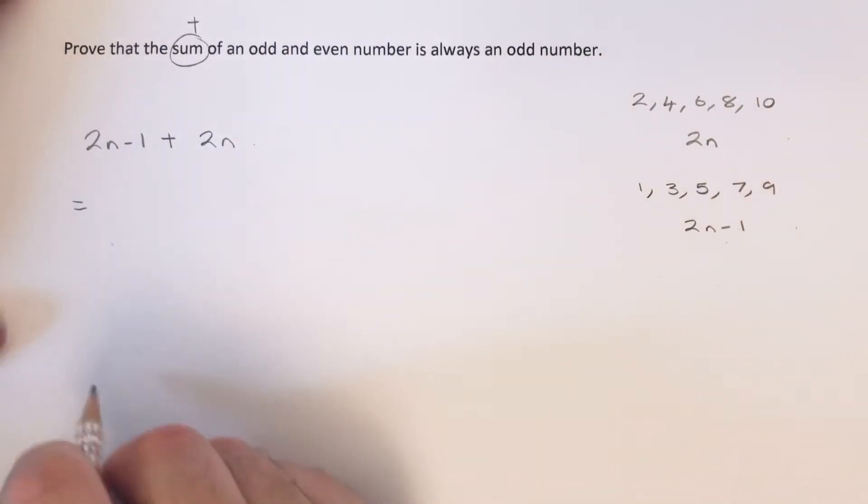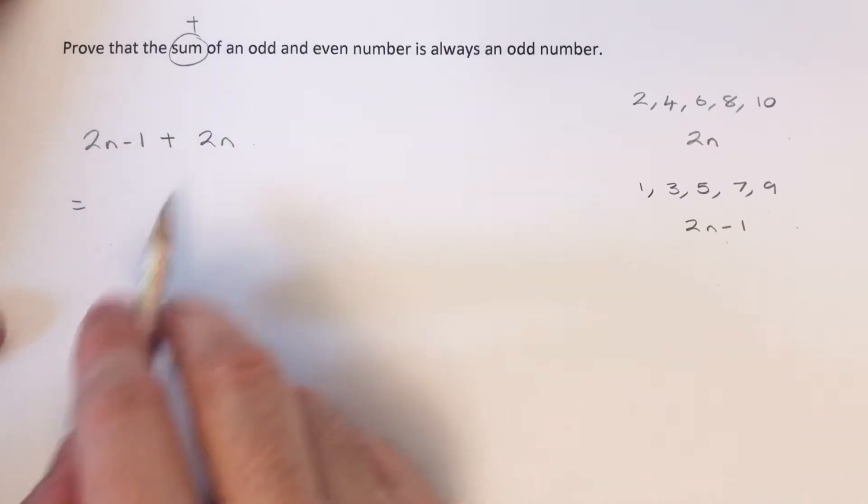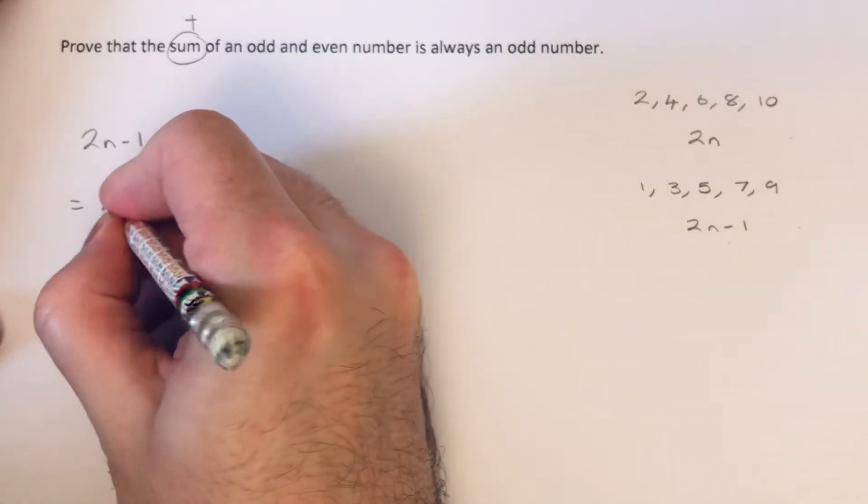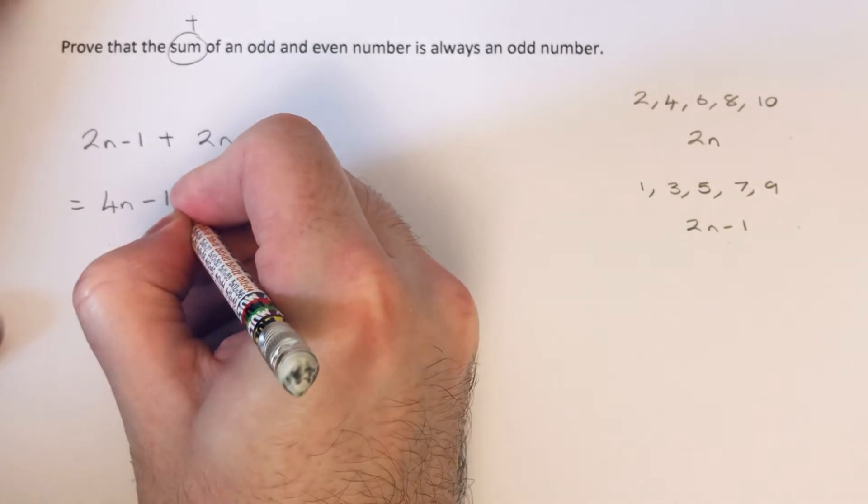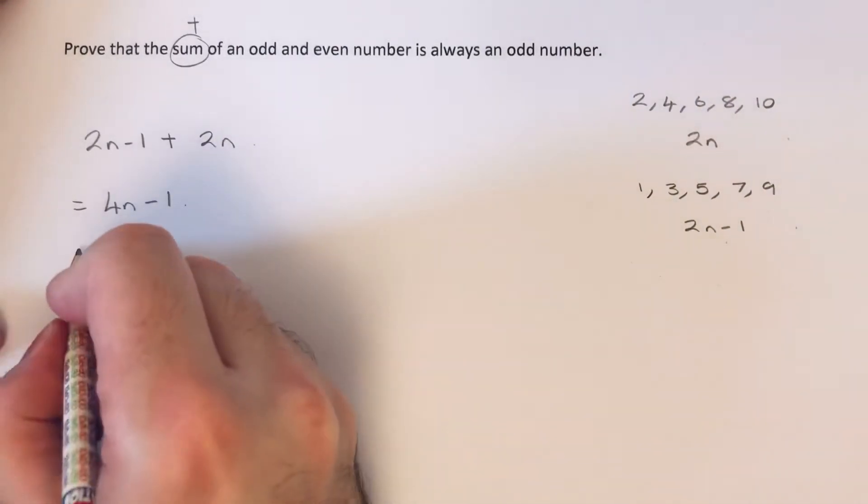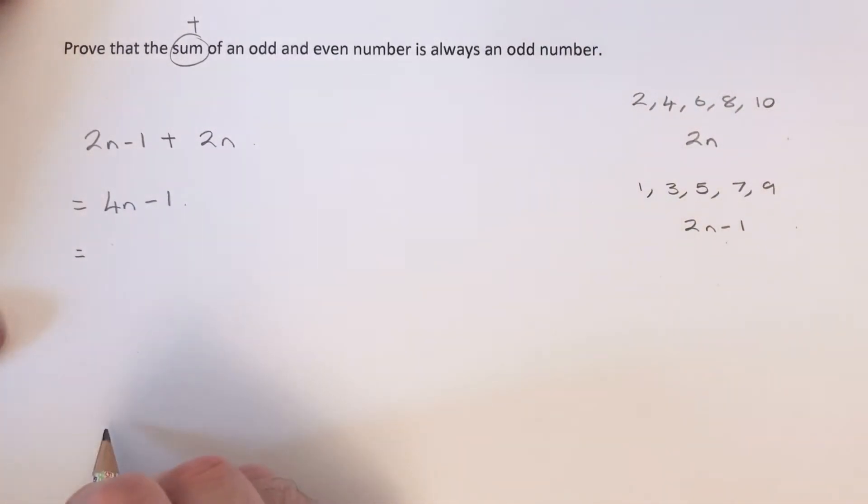What we're going to do next is simplify this expression to give us 4n minus 1. So we just need to show now that this is an odd number.